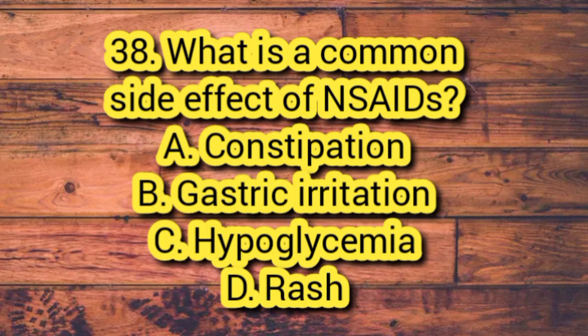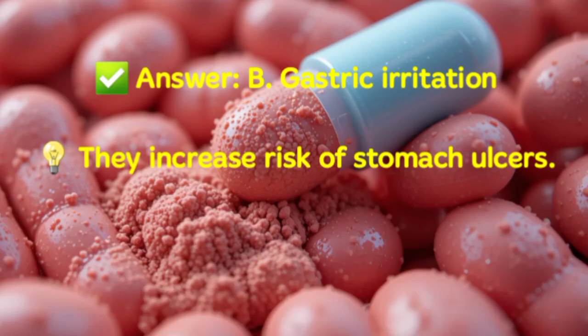Question 38. What is a common side effect of NSAIDs? A. Constipation. B. Gastric irritation. C. Hypoglycemia. D. Rash. Answer: B. Gastric irritation. NSAIDs increase the risk of stomach ulcers.